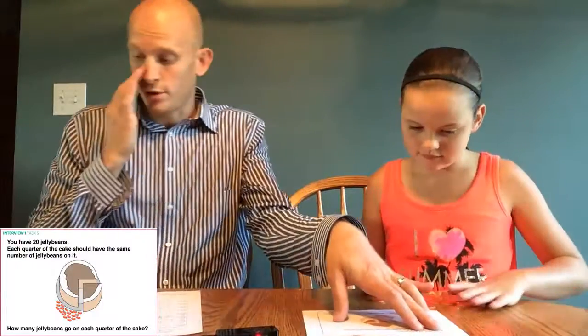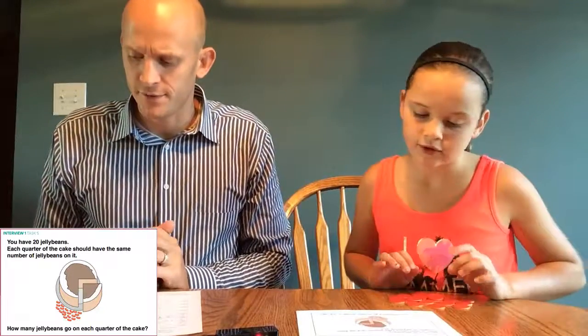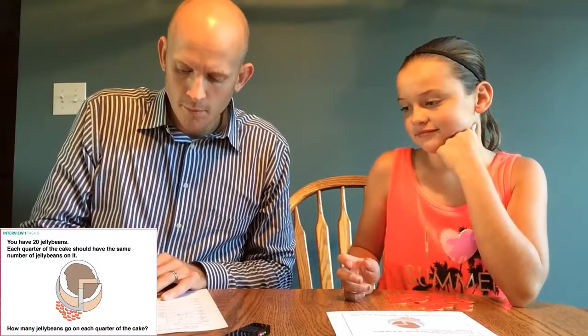Okay. You can use the counters for this. There are twenty counters total. You have twenty jelly beans that you could represent with counters if you need to. Each quarter of the cake should have the same number of jelly beans on it. How many jelly beans go on each quarter of the cake? Five? Talk to me about how you thought about five as an answer. Well, I know that quarters, when you split a circle into quarters, that you had four pieces to split it equally. And then I know four times five is twenty. Alright, thank you.